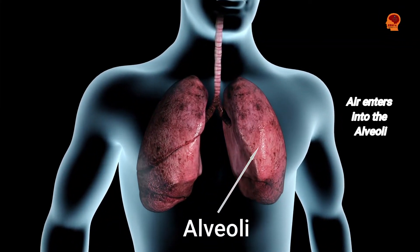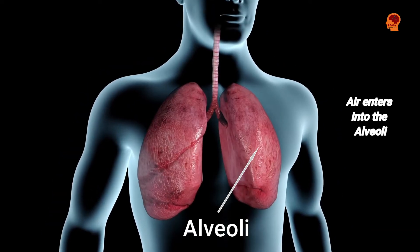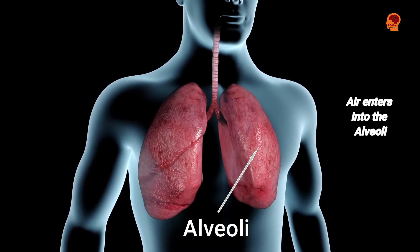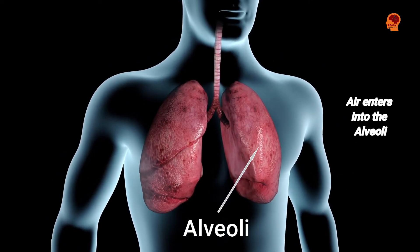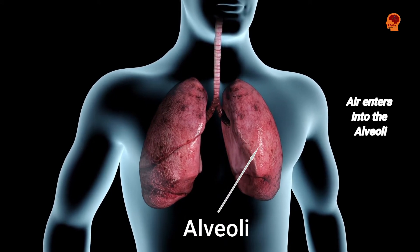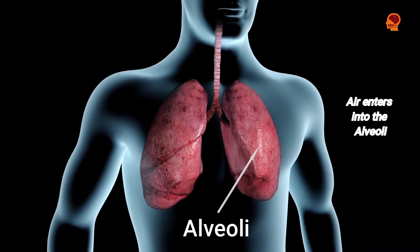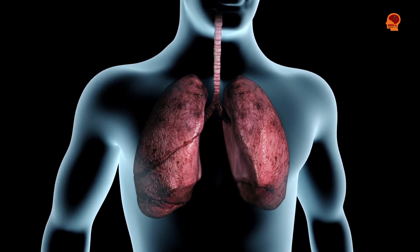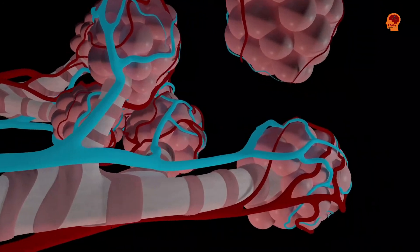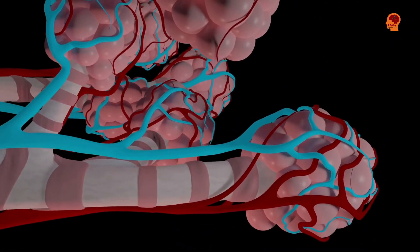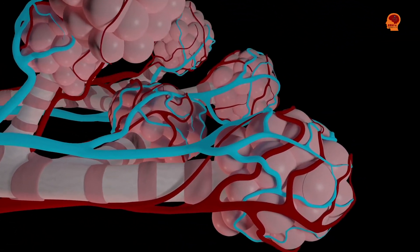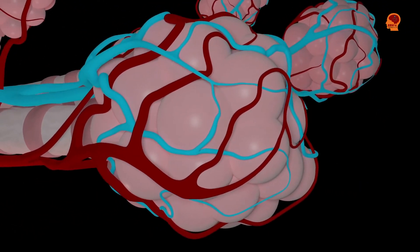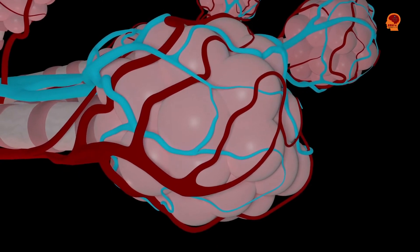When we breathe in, air enters into the alveoli and life-giving oxygen is conveyed through them into the blood and supplied to all parts of the body. The unwanted waste carbon dioxide is transmitted from the blood to the alveoli and is then breathed out.